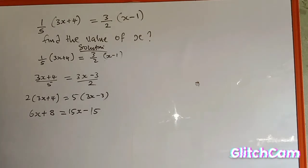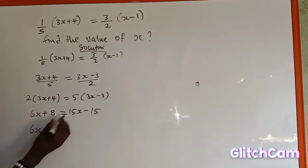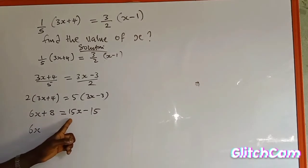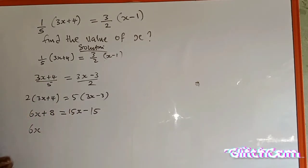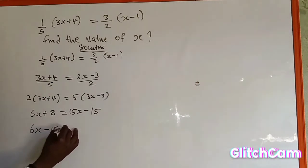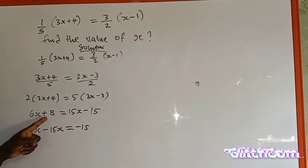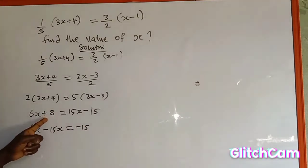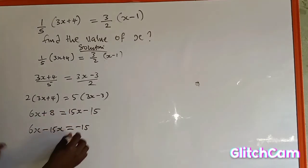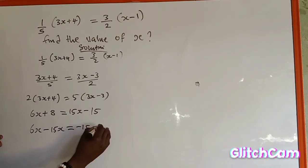So the next is to collect the like terms. We are going to move the one with variable to the left-hand side and the constant to the right-hand side. We have 6s here and we have 15s here. This 15s is positive, it's going to cross to the left-hand side to change to negative 15s, which is equal to, we have negative 15 here, and this 8 is positive. It's going to cross to meet this 15, it's going to change to negative 8.